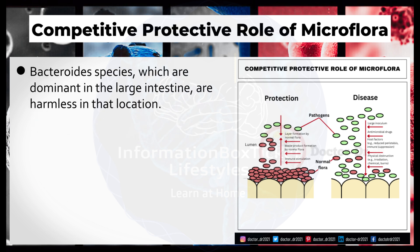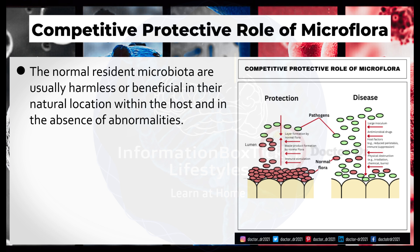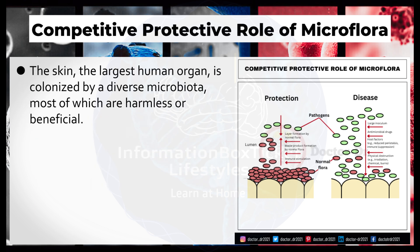Bacteroides species, which are dominant in the large intestine, are harmless in that location. However, if they are introduced into the peritoneal cavity or pelvic tissues along with other bacteria due to trauma, they can cause bacteremia. The normal resident microbiota are usually harmless or beneficial in their natural location within the host, but Bacteroides species can cause disease if they enter foreign body sites, especially in large numbers and when predisposing conditions exist. The skin, the largest human organ, is colonized by a diverse microbiota, most of which are harmless or beneficial.